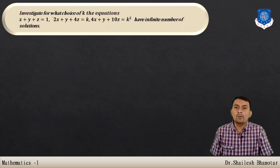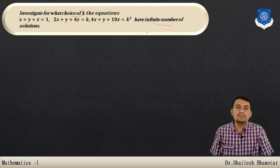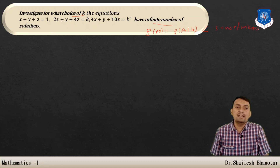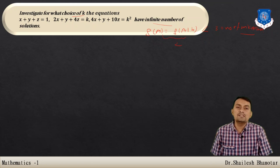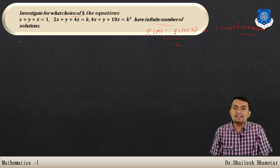Next question: investigate for what choice of k does the system have infinitely many solutions. We want rank(A) = rank(augmented matrix) < 3 (number of unknowns x, y, z), meaning we want rank = 2. Write the augmented matrix: [1, 1, 1 | 1], [2, 1, 4 | k], [4, 1, 10 | k²].